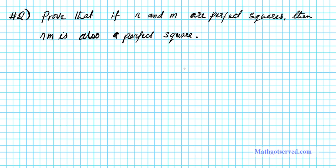So the first thing we are going to do is take a look at n and m. We are told that they are perfect squares. Now how can we capture that statement in a mathematical form? Can we write an equation using this fact? And the answer is yes.